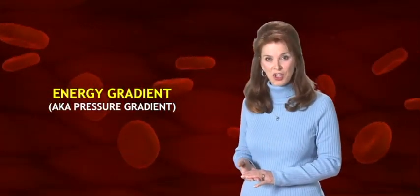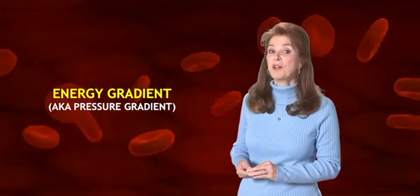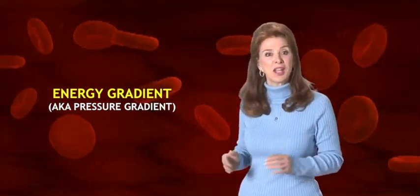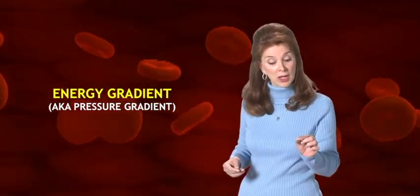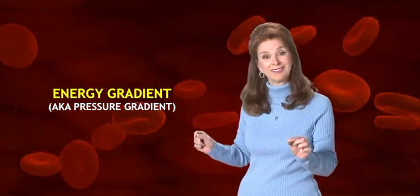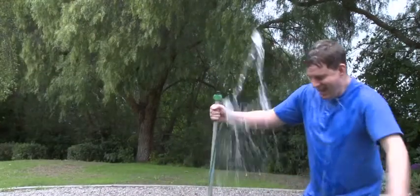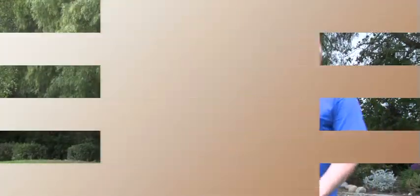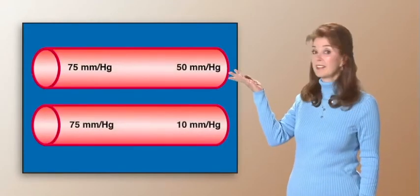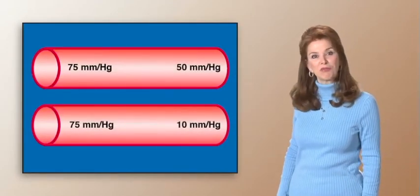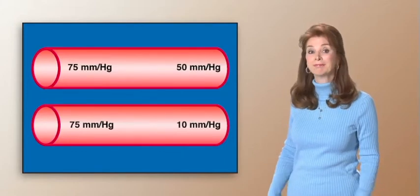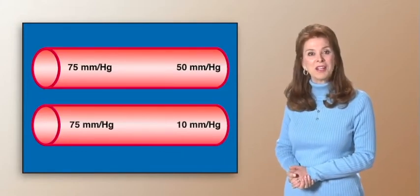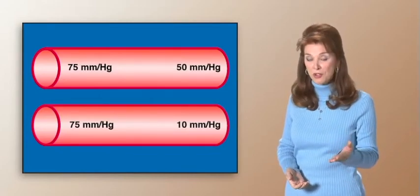In order for blood to flow, there must be a pressure difference between two points within the vessel. We call this the energy gradient, or pressure gradient. The volume of flow depends on the total fluid energy difference between one location and a second location. The greater the energy gradient, the greater the volume flow. In looking at this graphic, which one will have an increased volume flow? That's right, the one on the bottom, because it has an increased energy gradient or pressure difference.